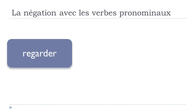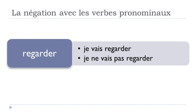For le futur proche, remember it uses the verb ALLER — so JE VAIS REGARDER, meaning 'I am going to watch.' Since you have two verbs, the negative form wraps around ALLER: NE goes before ALLER and PAS goes right after it. So: JE NE VAIS PAS REGARDER.